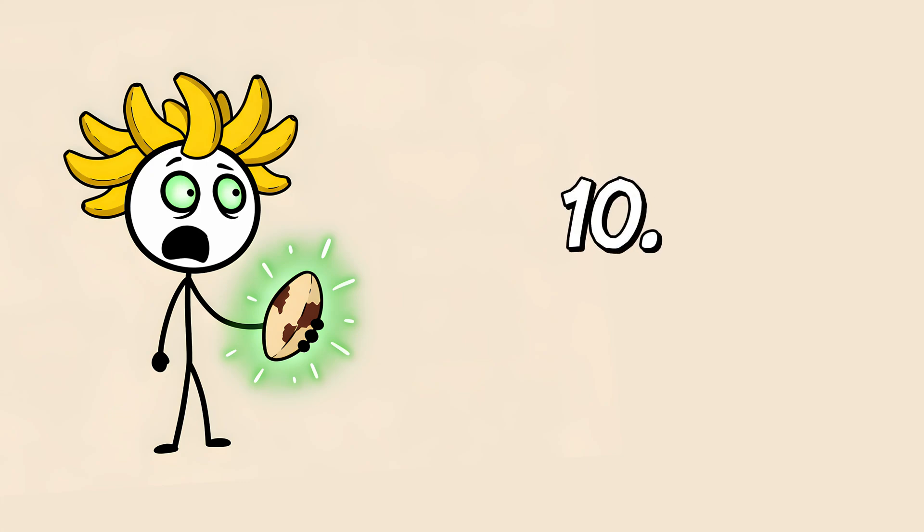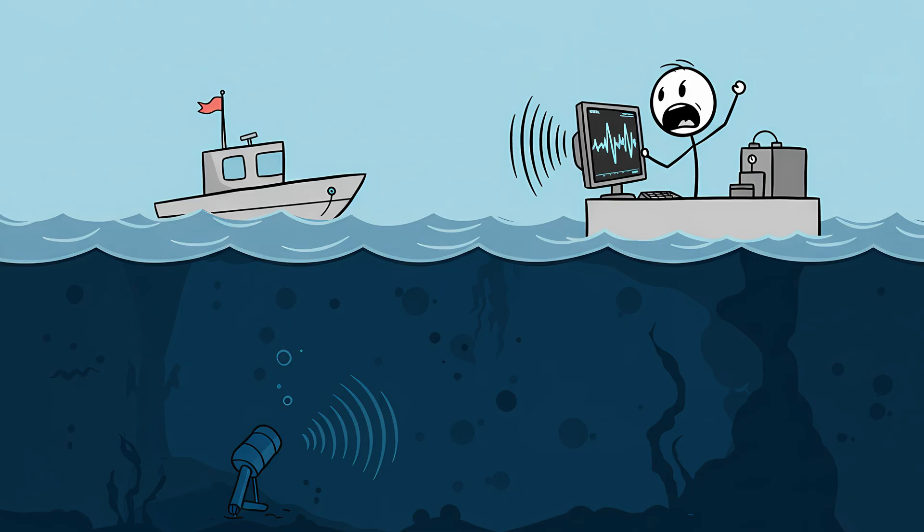Let's get weird into it. Number 10: The Bloop. Back in 1997, the ocean basically pulled a jump scare on humanity. Somewhere in the South Pacific, hydrophones, those underwater microphones the Navy uses to spy on submarines, suddenly picked up this insanely loud, low-frequency noise. Scientists nicknamed it the Bloop.